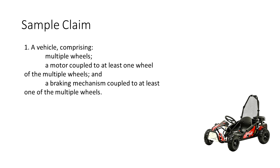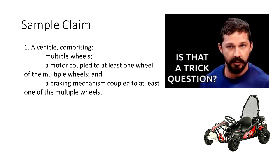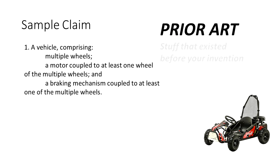Things are coming along with our claim, and then the workshop instructor will reveal it's a trick question. Why? Because claims do not exist in a vacuum — they are written in consideration of prior art. Prior art is the legal term meaning stuff that existed before your invention. The instructor will say: to write an effective claim we should consider what the prior art is and make sure our claims don't read on the prior art we know of. There may be prior art we don't know about, but we have to work with what we know.